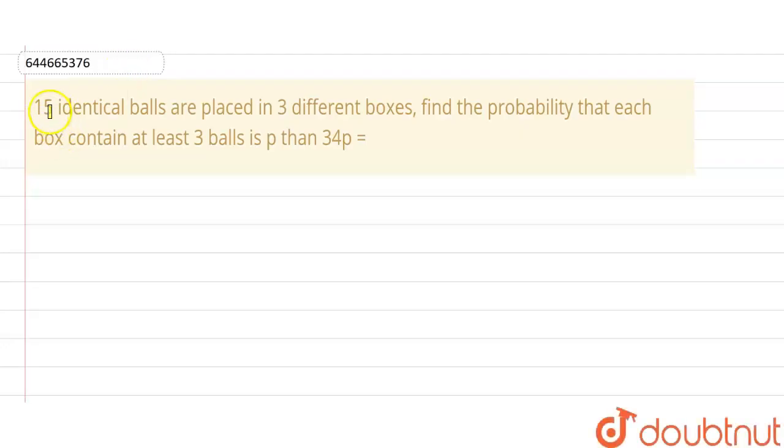Hello friends, we have a question here: If 15 balls are placed in 3 different boxes, find the probability that each box contains at least 3 balls is P, then 34P is equal to?